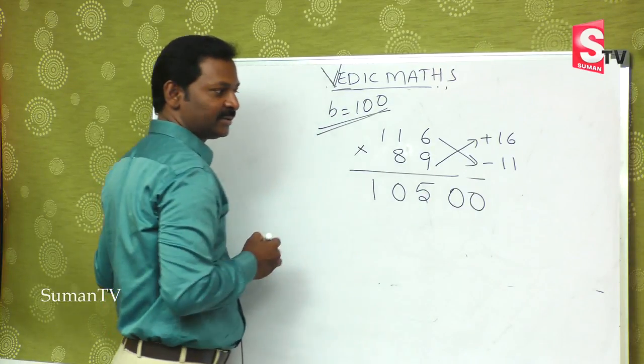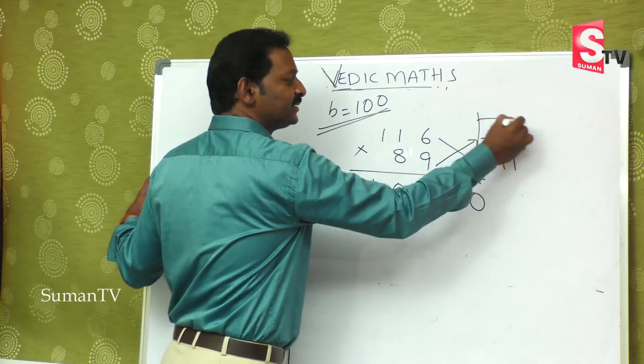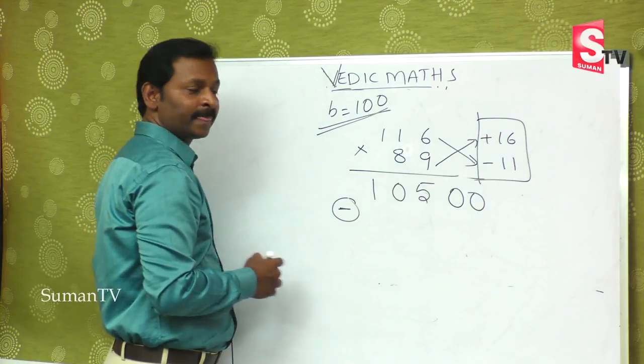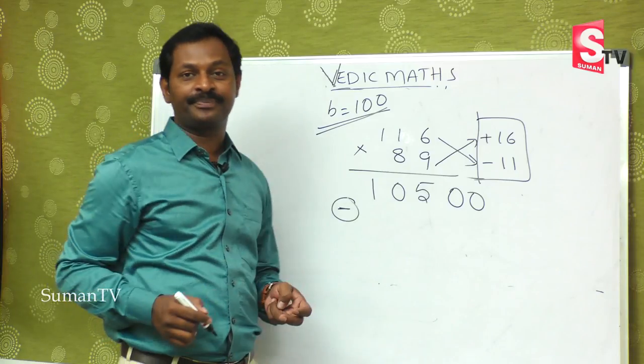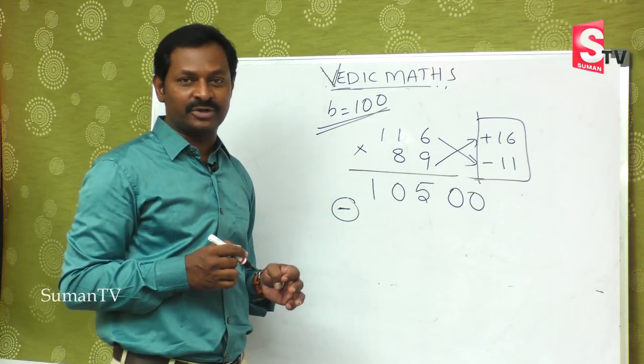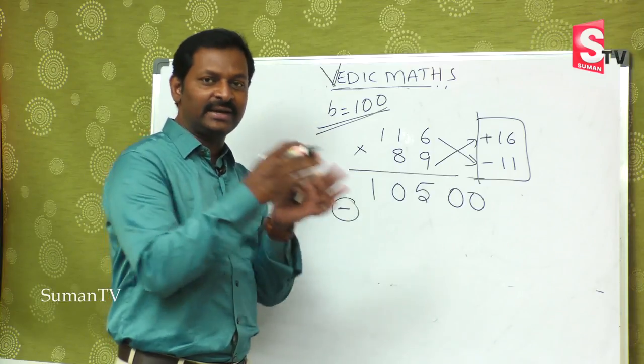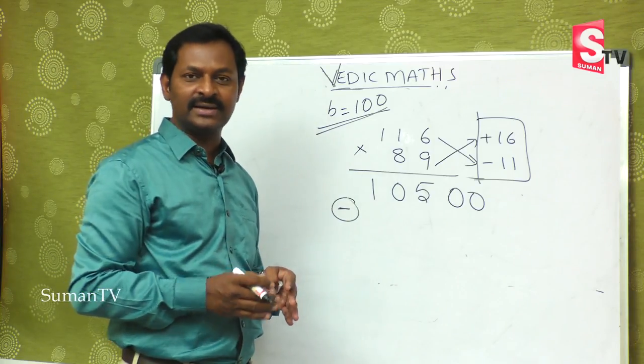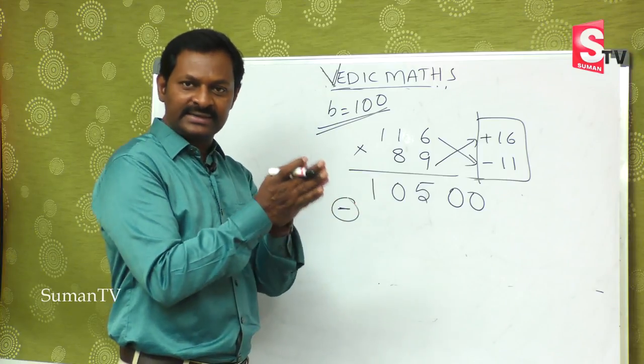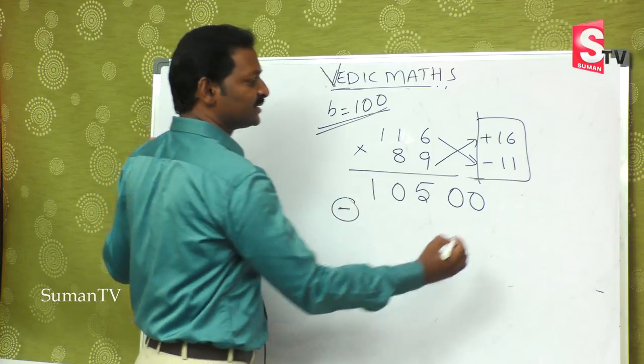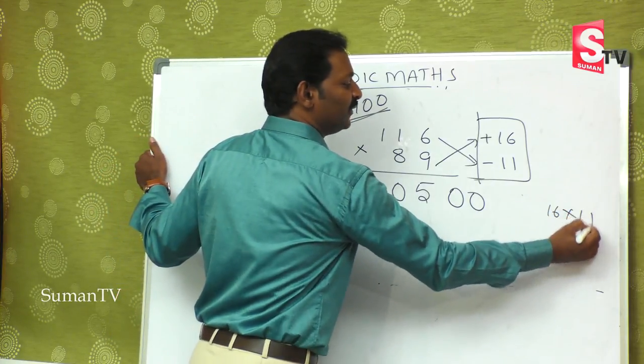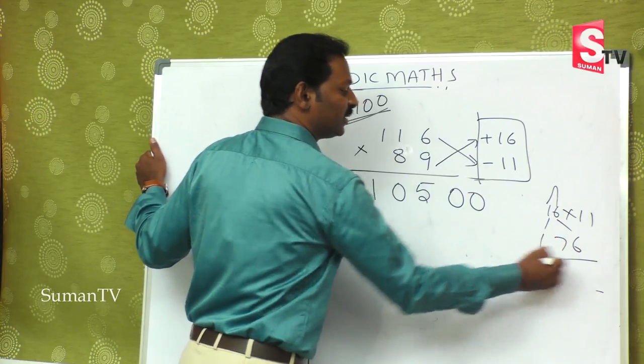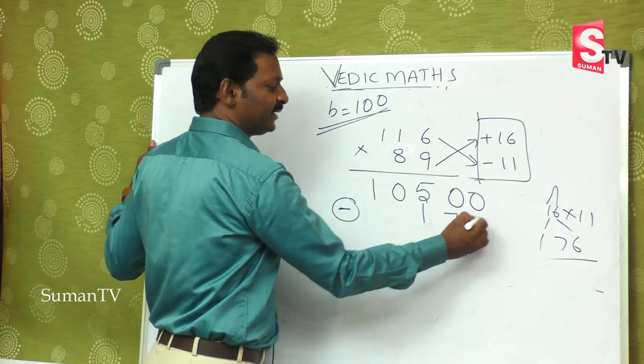Now the next important part: plus into minus gives minus. So 16 into 11. Using the 11 concept, the first digit remains same, last digit remains same, add them and put in the middle. 1 plus 6 is 7, so 16 into 11 is 176.